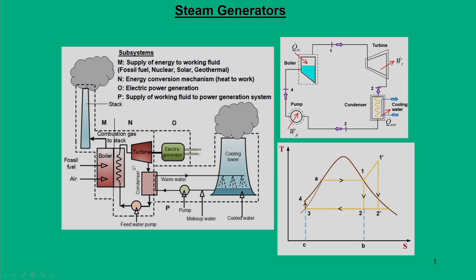Looking at our previous analysis of what a steam power system looks like, it has three main segments M, N, O, and P. M stands for the supply of energy to the working fluid. Our working fluid is water, and the energy supply can come through fossil fuel, nuclear, solar, or geothermal sources. Our main focal point for the next few lectures will be on steam generators - the part M. In previous lectures we covered turbines, condensers, and subsequently we will cover cooling towers.